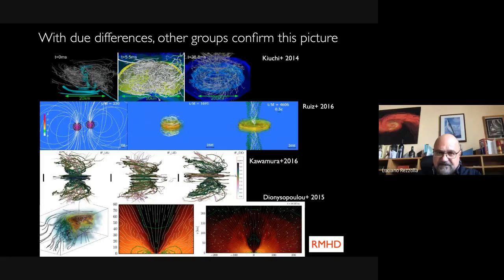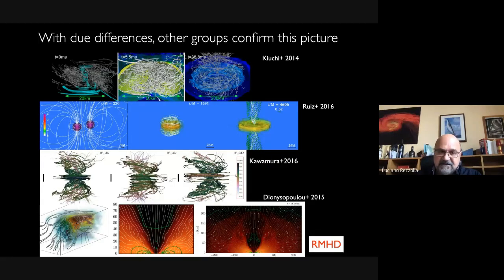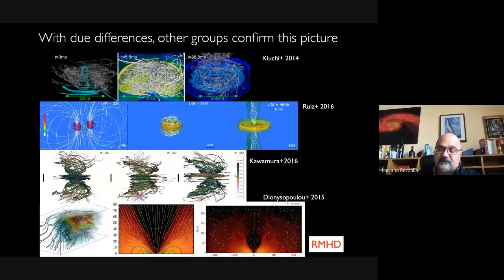Other groups have since done similar simulations and they see very similar results. Overall there is agreement in the literature that magnetic fields in neutron stars do the trick. We still don't know how to produce an outflow, and this is probably because we're missing a lot of microphysics. This is where getting neutrino transfer right is so important, but we're not there yet.